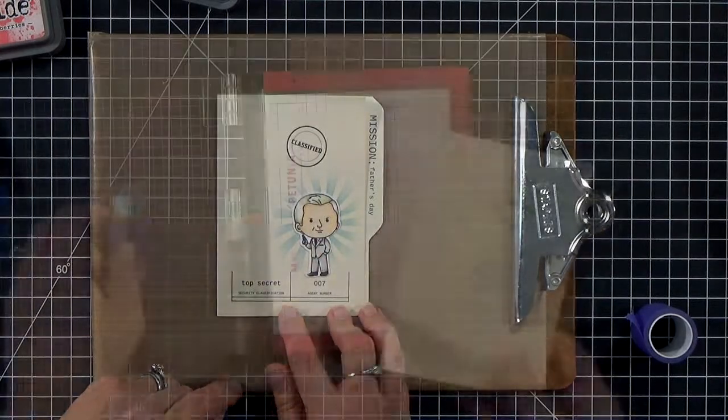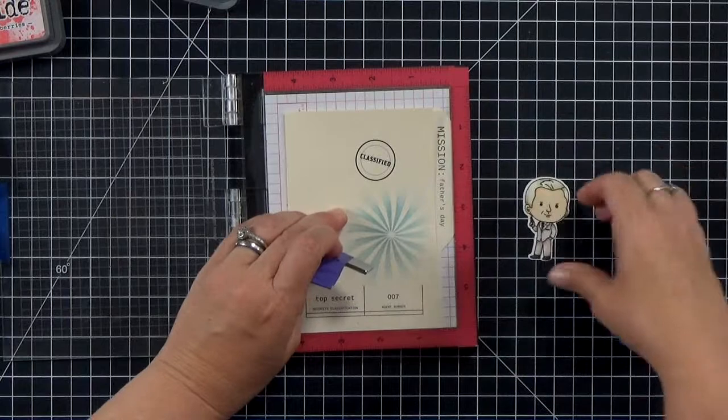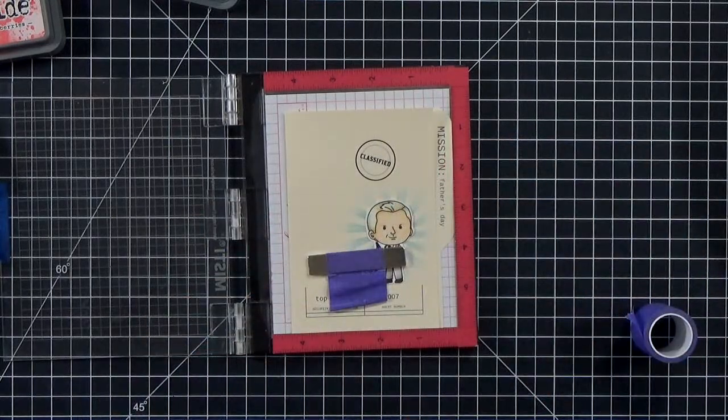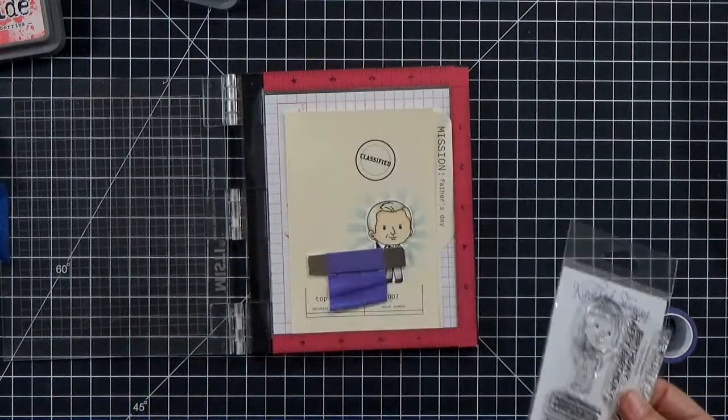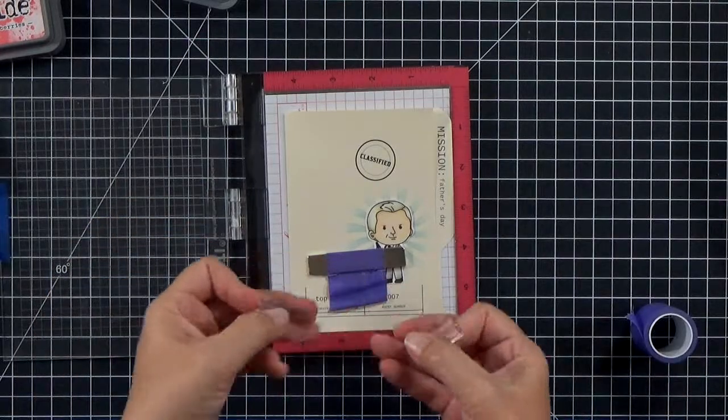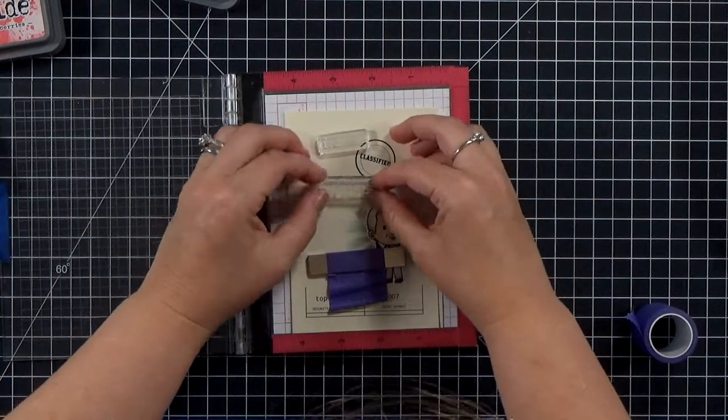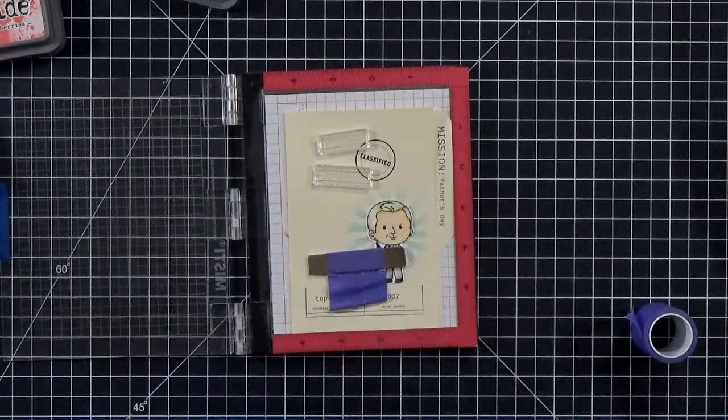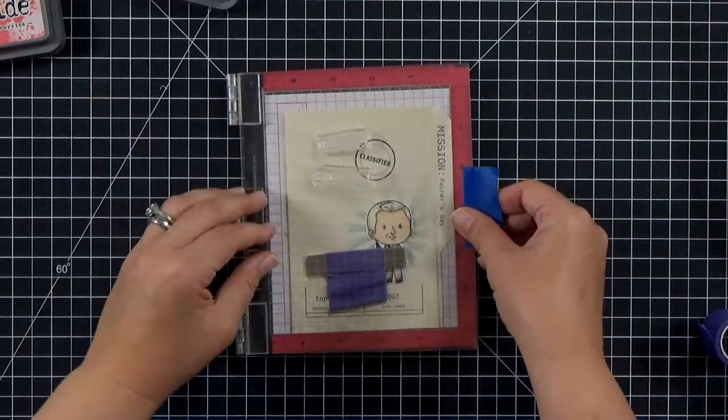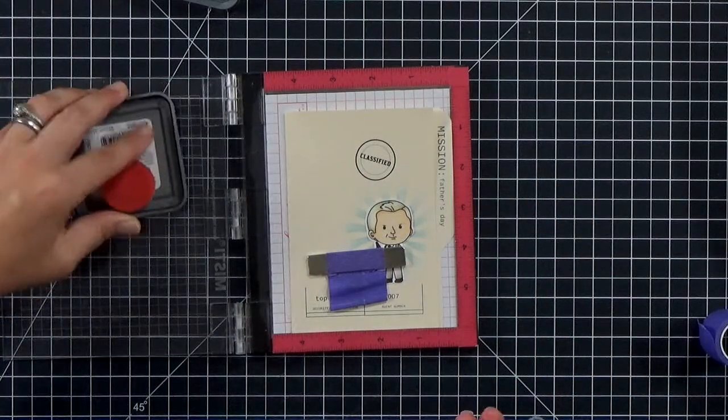Now I want to add a little bit of stamping to the front as well. So I'm going to kind of line it up, put my character in place, and then I'll grab the Confidential and the Top Secret stamps from the set. And then I'm just going to kind of put them in place here and pick them up with my MISTI. And this time I'm going to use Festive Berries. It's a nice bright red ink. And this is again Distress Oxide.